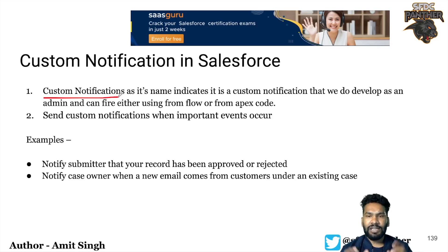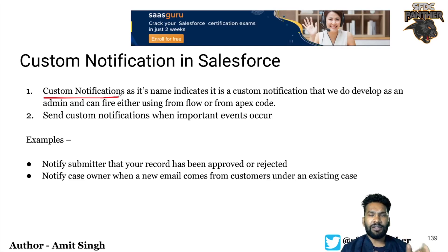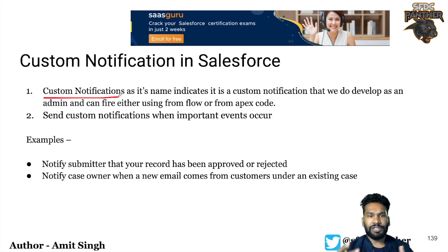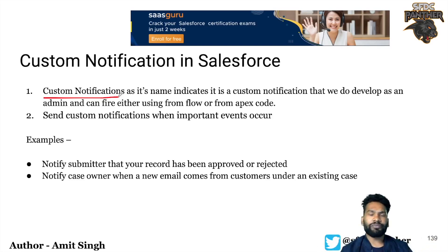Basically, custom notifications, as the name indicates, are custom notifications developed by either a developer or an admin. Once these custom notifications are set up, we can fire them using a flow, custom code, or even Process Builder. This is not something we have to develop using custom code; it is very simple — we just go to Setup and create those custom notifications.